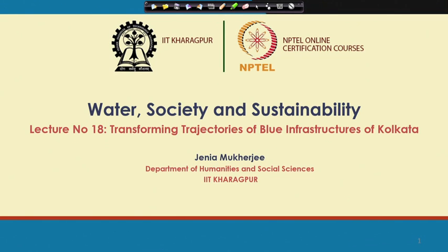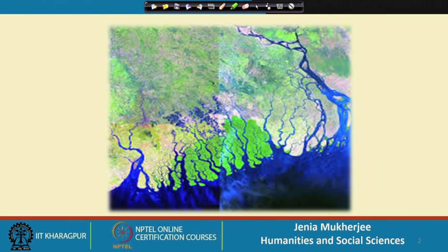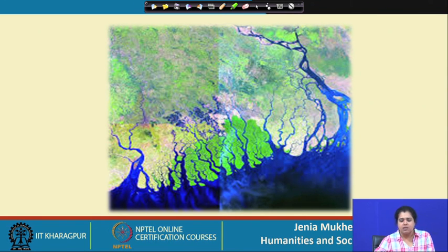The title of this presentation is 'Transforming Trajectories of New Infrastructures of Kolkata.' Kolkata would be a fascinating case to understand the relationship between water, society and sustainability because Kolkata's wider surroundings comprise river bodies, water bodies, rivers, distributaries, tributaries, inlets, canals, creeks, ocean and much more.